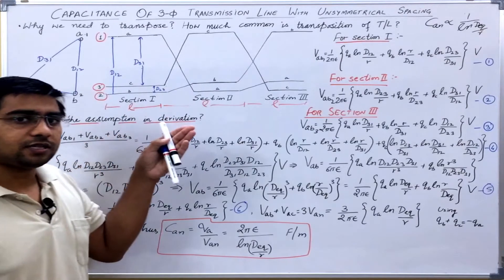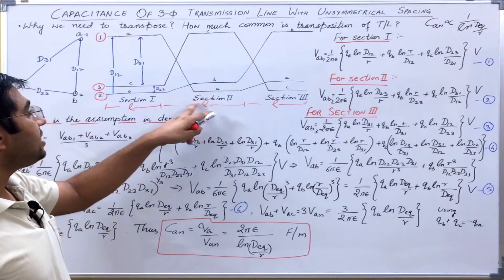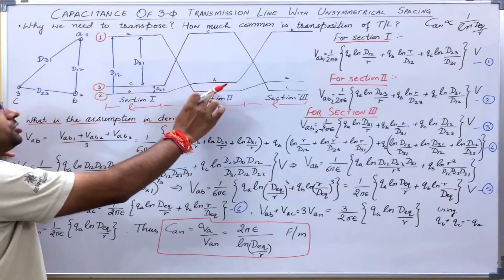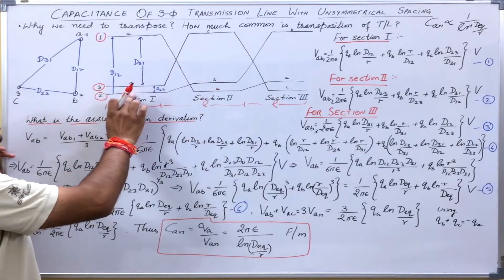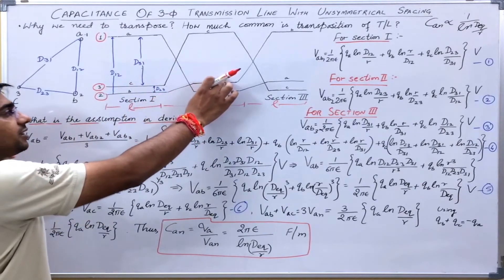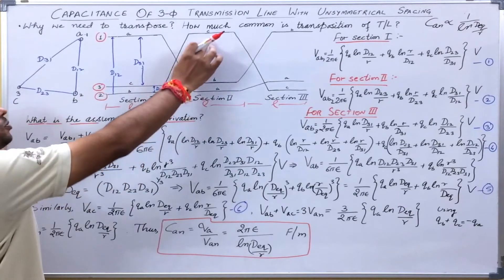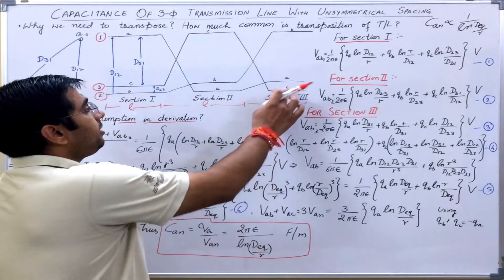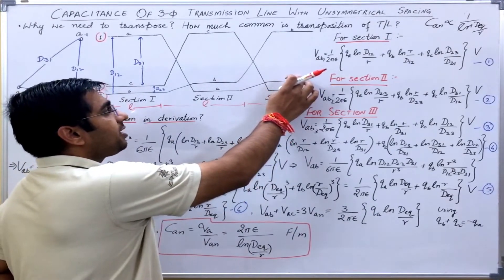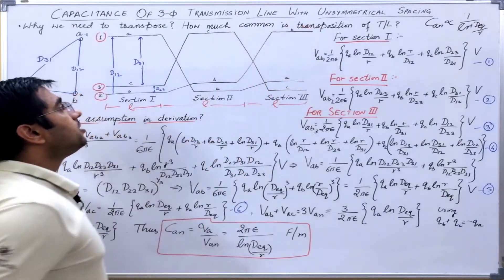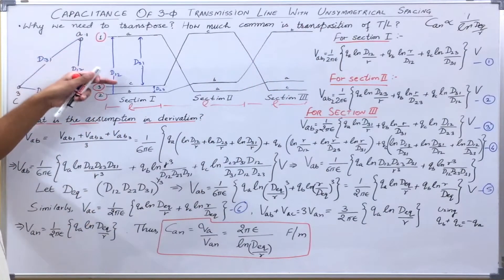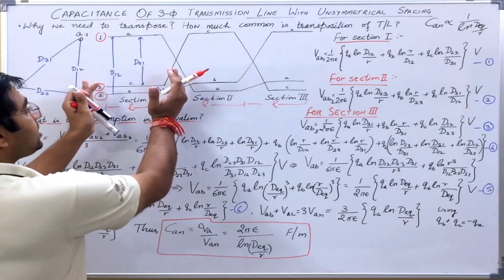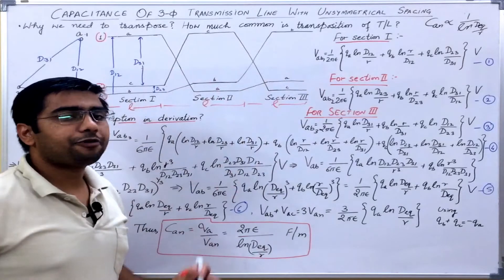After transposition, in section 2: A, which was occupying position 1, will come to position 2; B, which was occupying position 2, will come to position 3; and C will go to position 1. Similarly, in section 3: C will occupy position 2, A will occupy position 3, and B will occupy position 1. So we see that every phase has occupied every possible position, and the length for which that position is occupied is the same for every section. In this way, we try to neutralize any asymmetry that occurs due to unequal spacings.